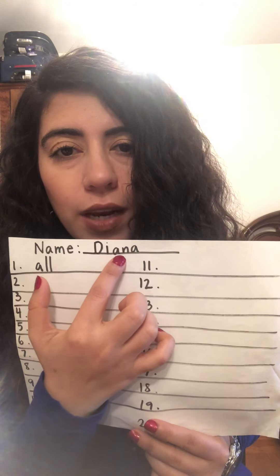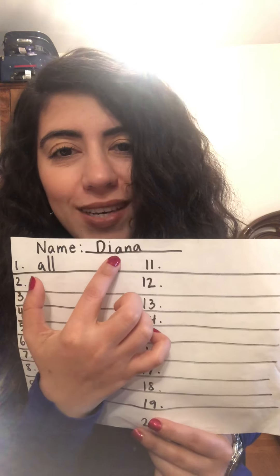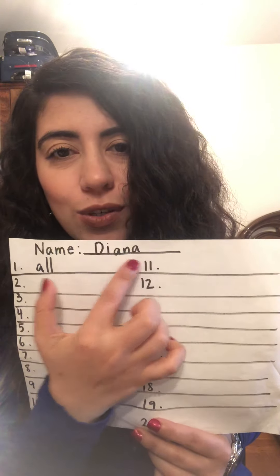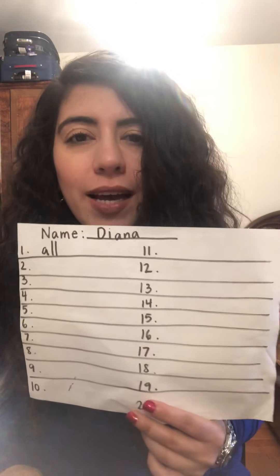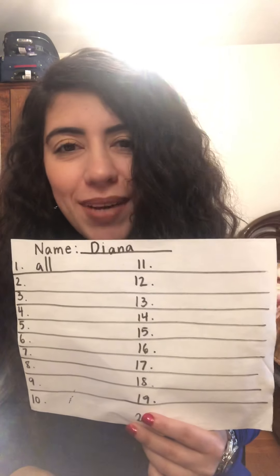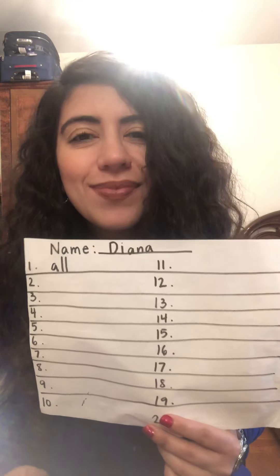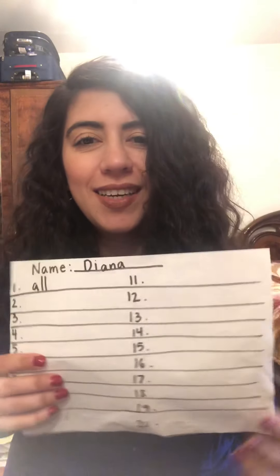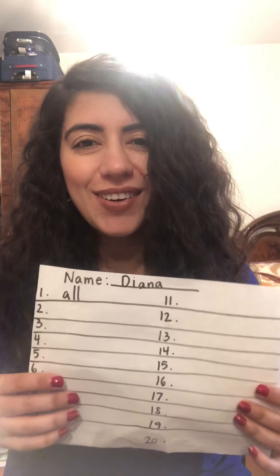My name starts with a D and it's a capital D. Then the rest of the letters of your name are all lowercase letters — lowercase I, A, N, A. My name's Deanna. So go ahead and write your name now.